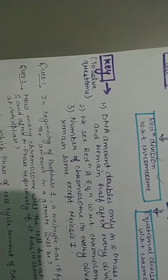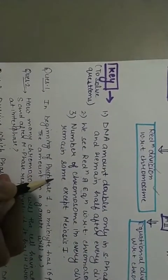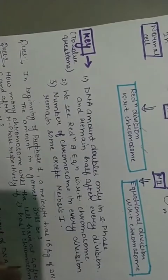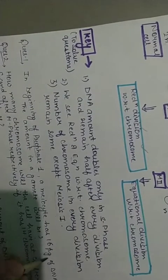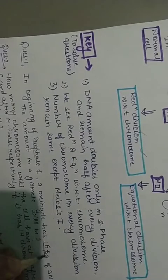Ab iske questions solve karte hai, so it will be more clear. In beginning of prophase 1, prophase 1 ne matlab ki S phase se nikal ke aya hoga. S phase ke andar amount of DNA double ho jata hai. Meiocyte has 16 pg of DNA.